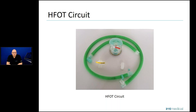The last circuit is also a single-limb circuit, but with no pressure line and no flow sensors — just the high flow circuit. When you use high flow, you don't have any alarming because there is no sensor. So the high flow circuit is just a heated limb — heating is very crucial for the HFOT circuit. You could also use a regular actively humidified circuit.